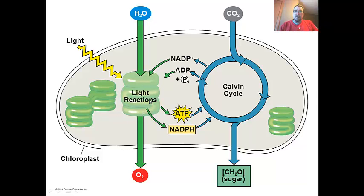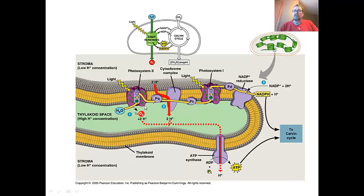What we're going to look at here in this video quickly is the light independent reactions that happen through photosystems. What you can see right here, there are two photosystems. They're labeled by discovery, not in order. The first one is photosystem two. The second one is photosystem one.